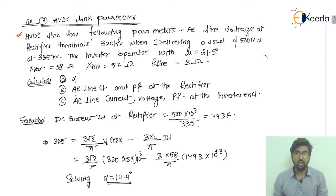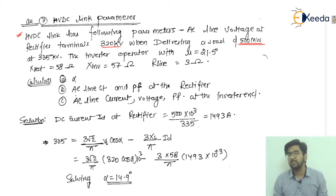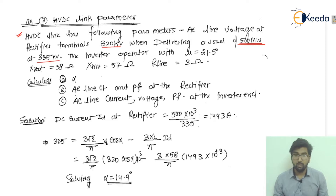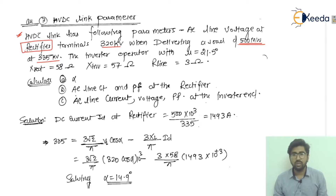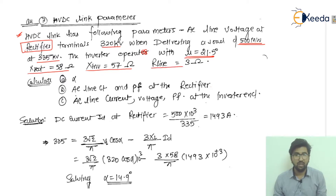The parameters given are: AC line voltage at the rectifier terminals is 320 kilovolts, delivering a load of 500 megawatt at 335 kilovolts — these are the values on the rectifier side. The inverter operates with mu = 21.5 degrees, X reactance = 458 ohm, X inverter = 57 ohm, and R line (resistance of the line) = 3 ohm.